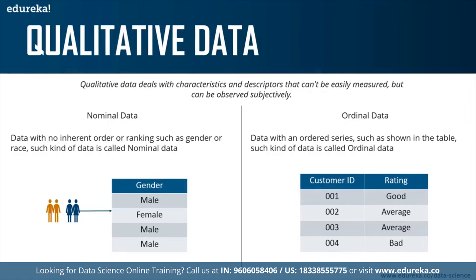Ordinal data is basically an ordered series of information. For example, if you went to a restaurant, your information might be stored in the form of a customer ID, and you would have rated their service as either good or average. Similarly, there will be a record of other customers who visited the restaurant along with their ratings. This is how ordinal data works — it has an inherent order or ranking.